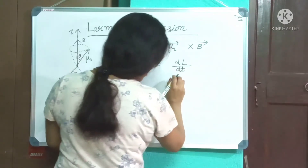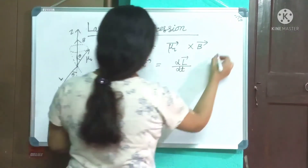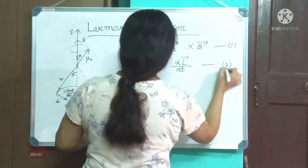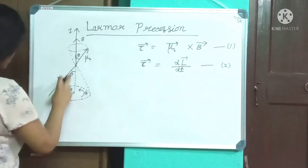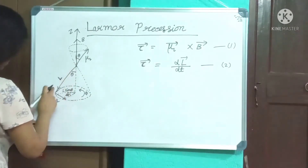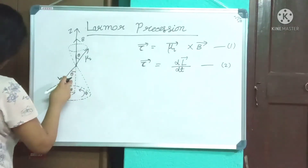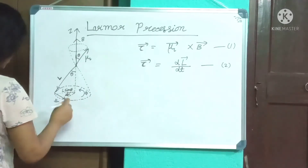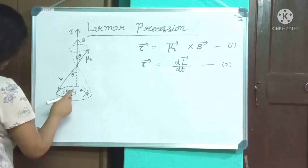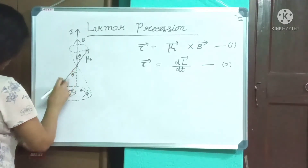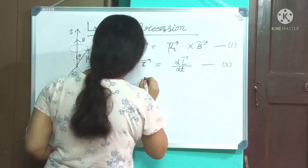Classically, τ equals dL/dt. Since the magnitude of L is fixed, L can only change its direction. This means L will precess around B — this is called Larmor precession — and the frequency of this precession is called the Larmor frequency.